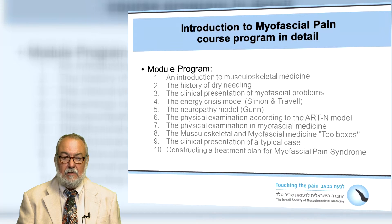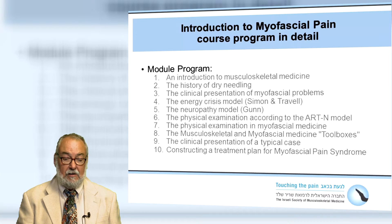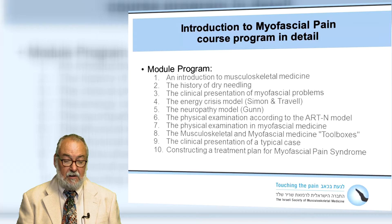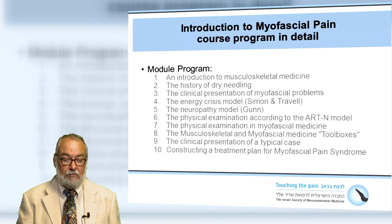The program modules will include a history of musculoskeletal medicine, history of dry needling, and the clinical presentation of myofascial pain. We will then discuss various models such as the energy crisis model of Simons and Travell and the neuropathy model as presented by Gunn. Physical examination will be explained, covering both the ARTN model and physical examination in myofascial medicine. Musculoskeletal and myofascial toolboxes will be presented, followed by clinical presentation of a typical case, concluding with constructing a treatment plan for myofascial pain syndrome.